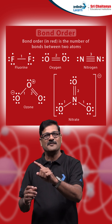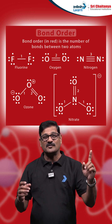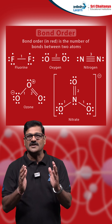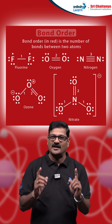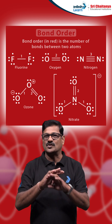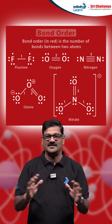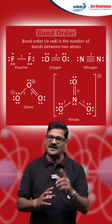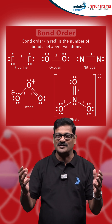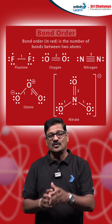So what can bond order tell us? If the bond order is zero, no bond exists and such a molecule never exists. If bond order is one, it is a single bond. Bond order of two means a double bond, and bond order of three means a triple bond.